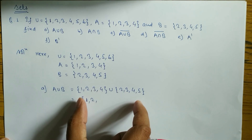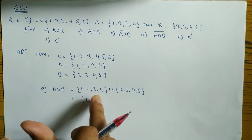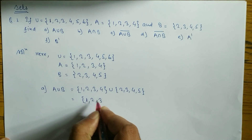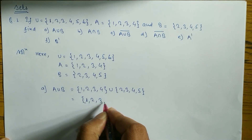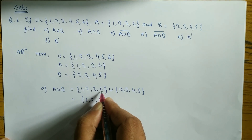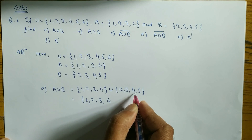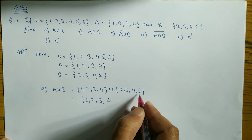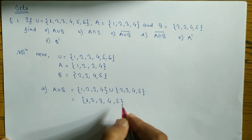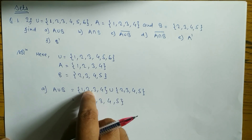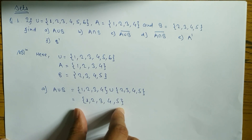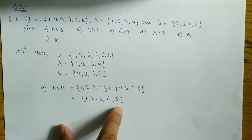Suppose 1 is in A — we write 1. 2 is in A and also in B, so no need to write it twice, only once. 3 is here, 4 is here. 5 is in B — so we write 5. Either belongs to A or belongs to B, we take all elements. So A union B = {1, 2, 3, 4, 5}.